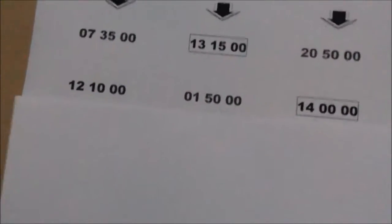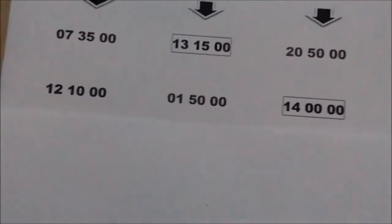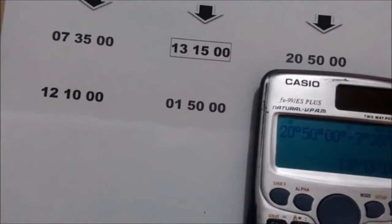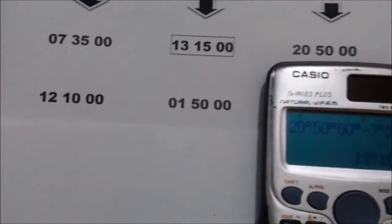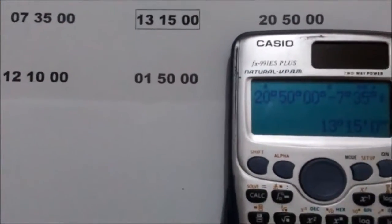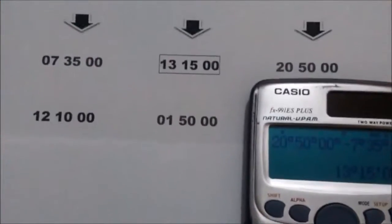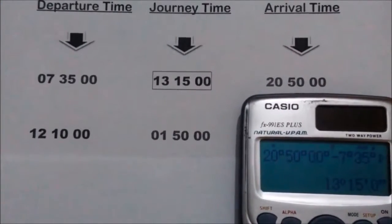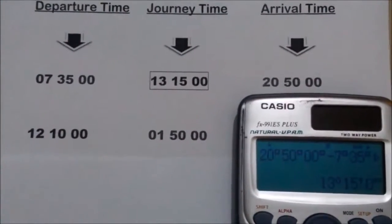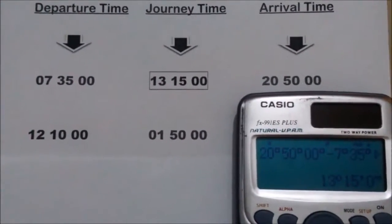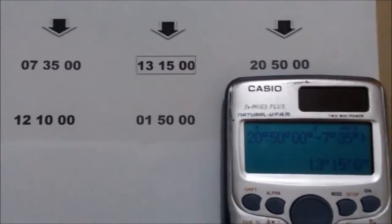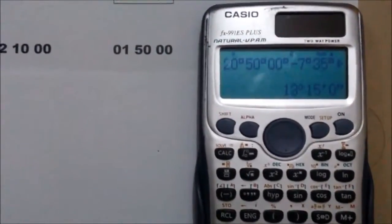We are going to find the arrival time. In this case, our departure time is 12 hours 10 minutes and our journey time is 1 hour 50 minutes. First, clear the screen of the calculator by pressing AC.